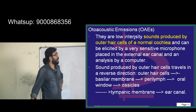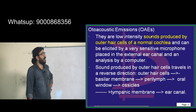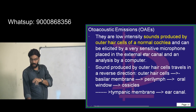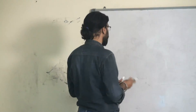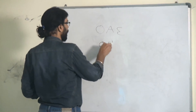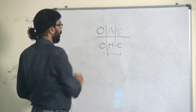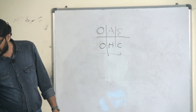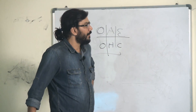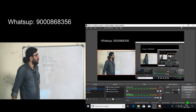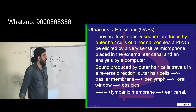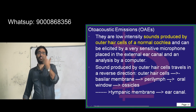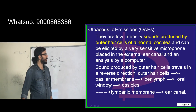Otoacoustic emissions are low intensity sounds produced by the outer hair cells of a normal cochlea. OAE comes from OHC - outer hair cells. The sound produced by the outer hair cells travels in the reverse direction: outer hair cells → basilar membrane → perilymph → oval window → ossicles → tympanic membrane → ear canal. If there is a normal cochlea, we will be able to catch this reverse sound.